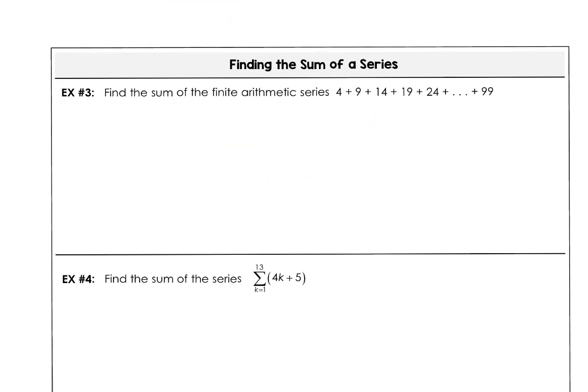Example 3 wants us to find the sum of the finite arithmetic series. We don't know how many terms there are. We know that it goes up to 99, starts at 4. So we've got to figure out how many terms before we can use any of our formulas. The rule is a sub n. It looks like the difference is adding 5. So 5n minus 1. Our last term is 99. So 100 is 5n. That means there are 20 terms.